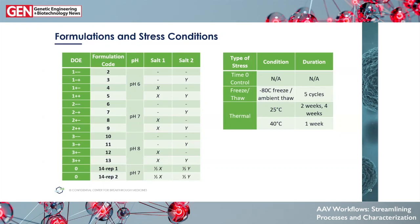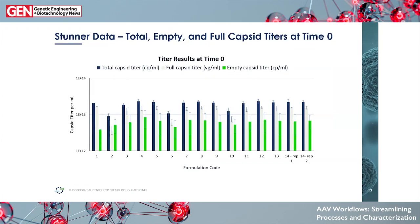Stress conditions used were time 0, freeze-thaw at -80°C, and ambient at 25°C and 40°C for different time points. From these, here are results from the Stunner. Looking at time 0 results, to give an example of the type of data we can get from Stunner on titer results: we have total capsid shown in the dark columns, full capsid, and empty capsid — you can get all this information from a single read.